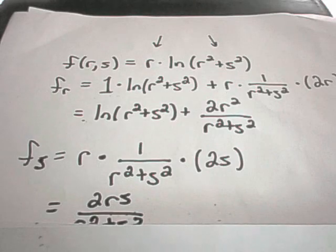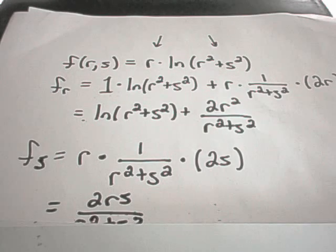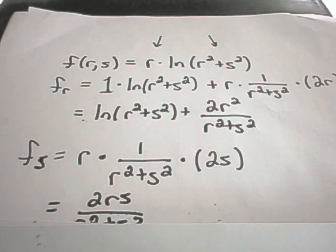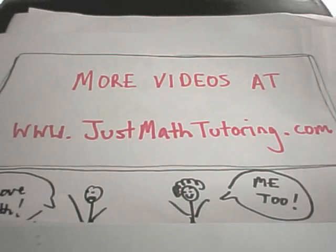So this is the basic rule of thumb on taking partial derivatives mechanically: you're treating some of the variables as constants and the others as variables, and then just using your normal differentiation rules. It can get a little tricky keeping everything in your head. If you have any questions, feel free to shoot me an email. I've got tons of other videos on my website — feel free to take a look.